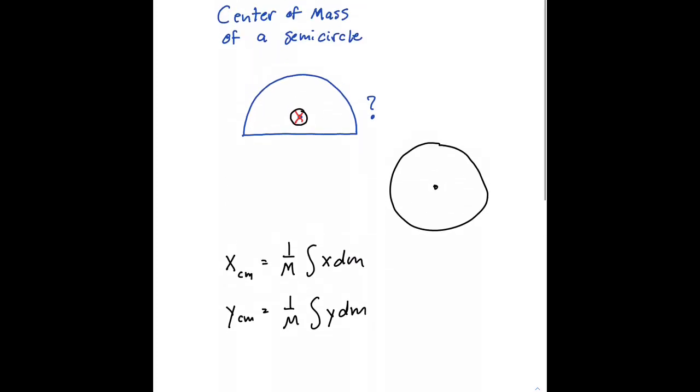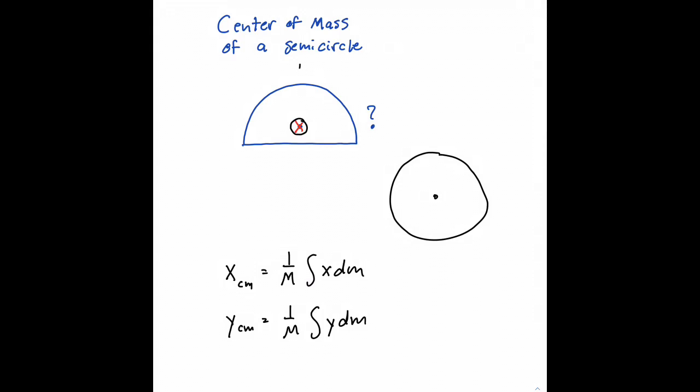Now, if we look at the symmetry of a semicircle, we know this much. If we place our semicircle on the xy-axis, then we know the location of the center of mass coordinate on the x-axis, x_cm, is going to equal 0.